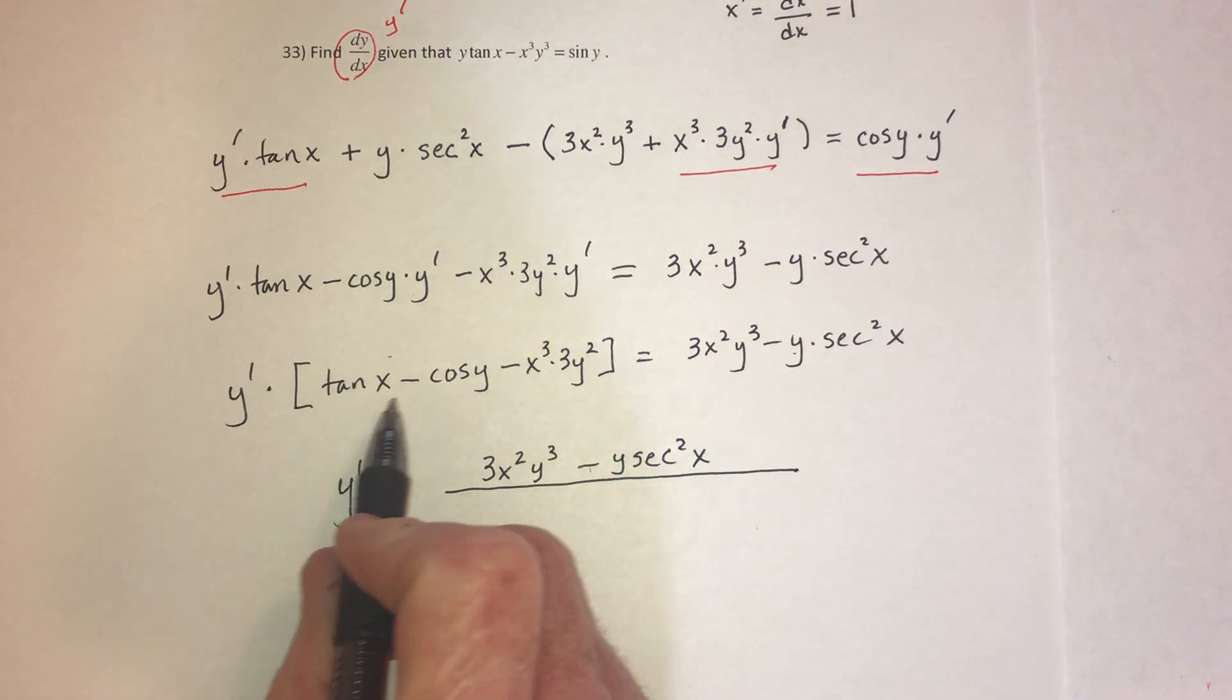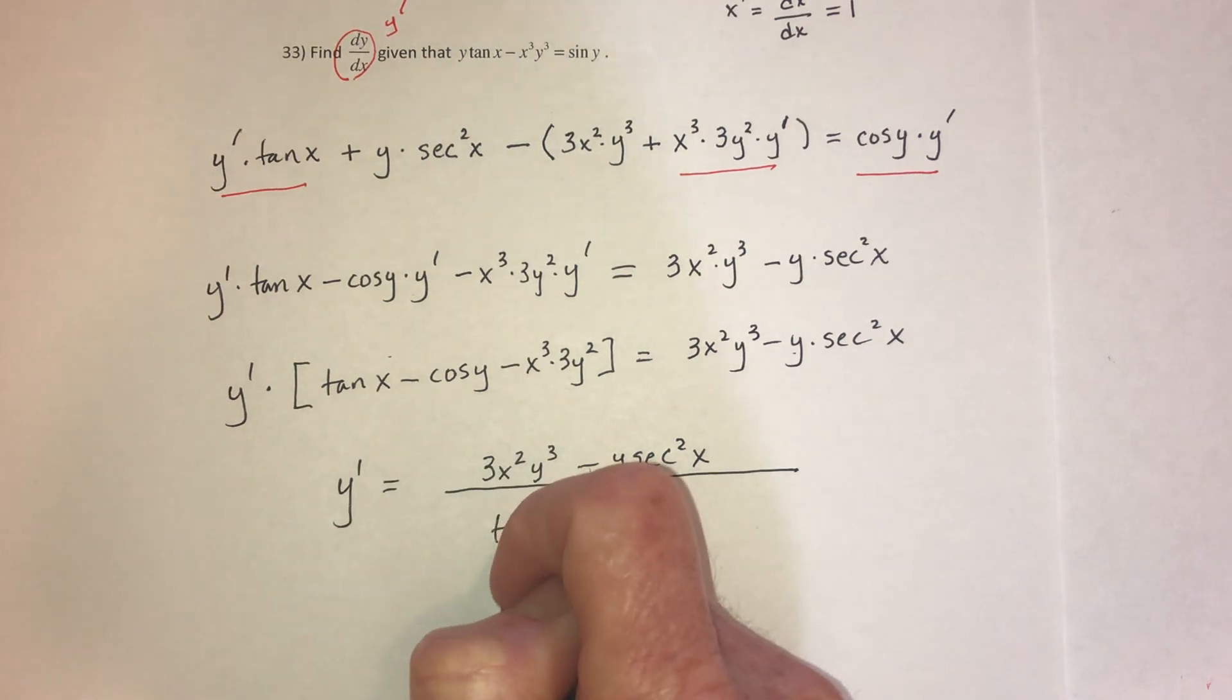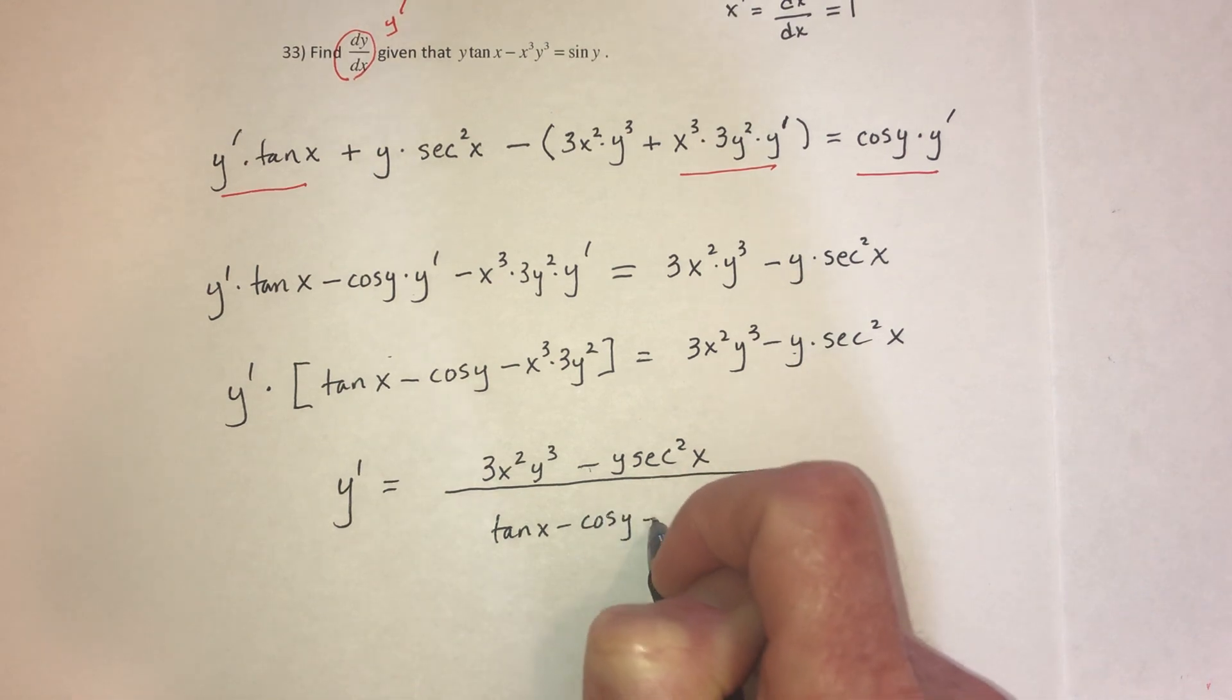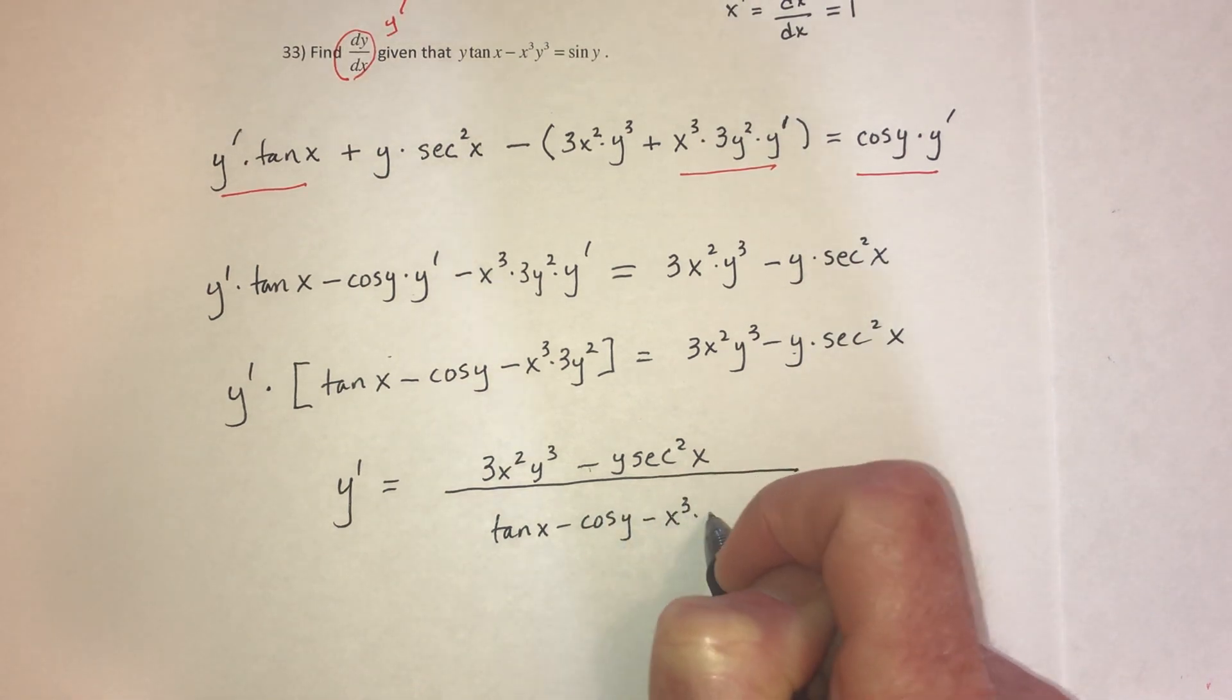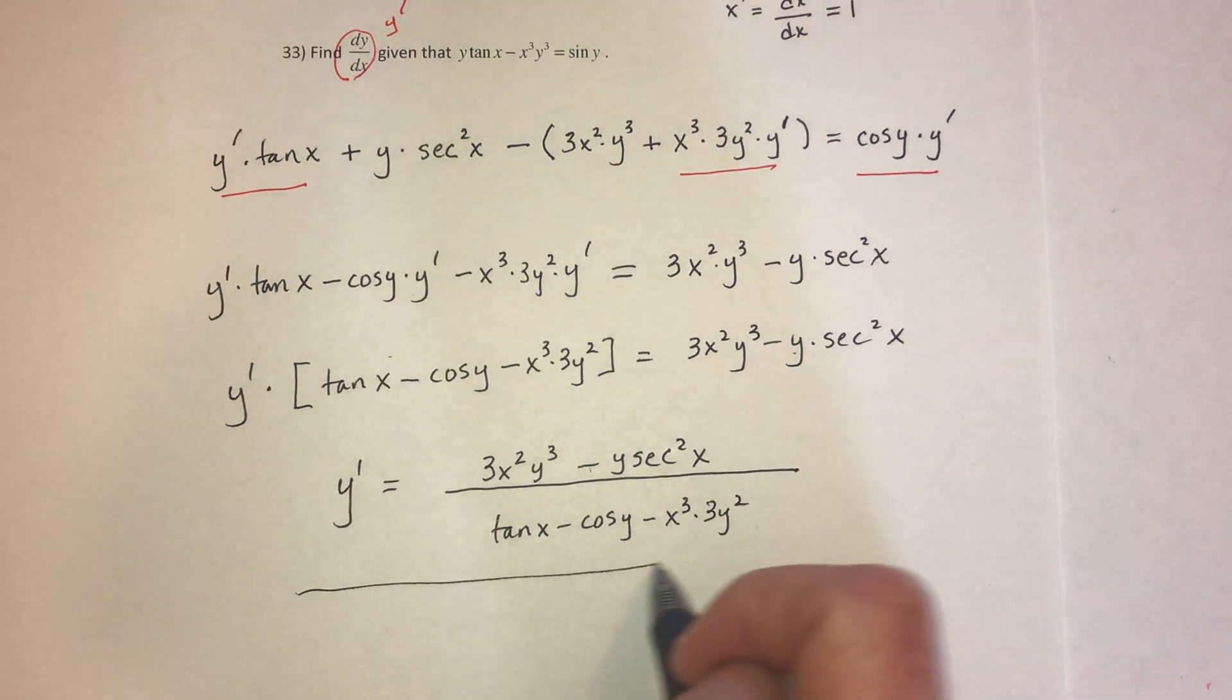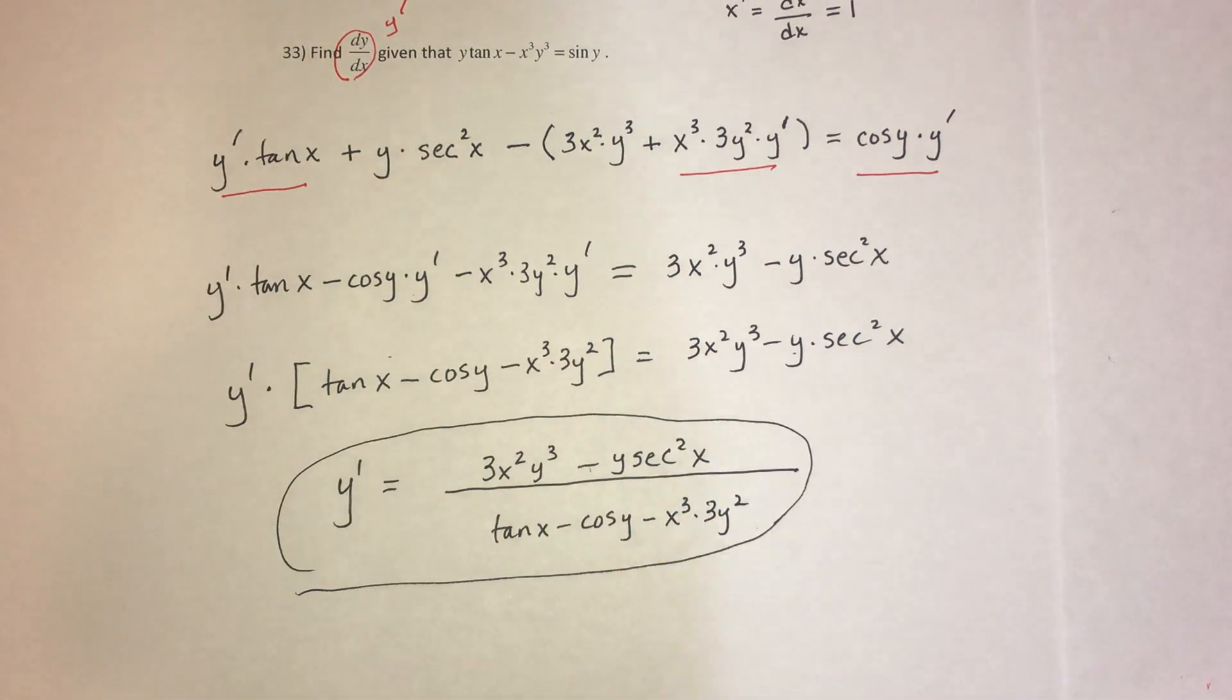And then divide both sides by this: tangent of x minus cosine of y minus x cubed and 3y squared. And then nothing can be canceled. So that's it.